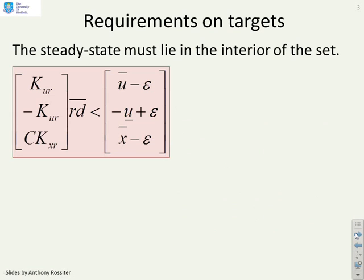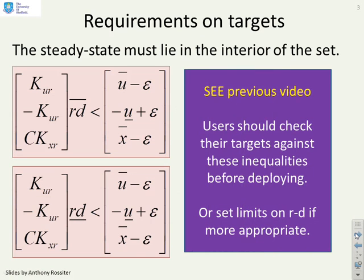Just to remind you of the previous video, the targets or the signal R-D have got to lie between an upper limit and a lower limit which satisfy these constraints, because if not, the targets are not reachable and our problem is not properly defined. So the first thing you need to do is make sure you define an appropriate lower limit for R-D and upper limit for R-D.